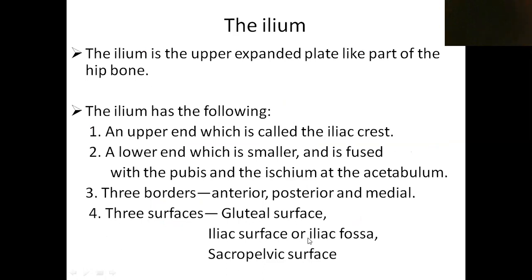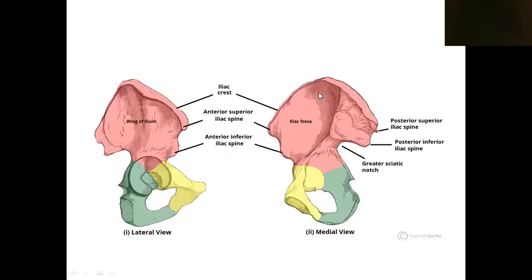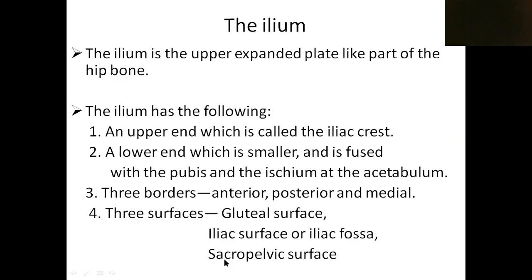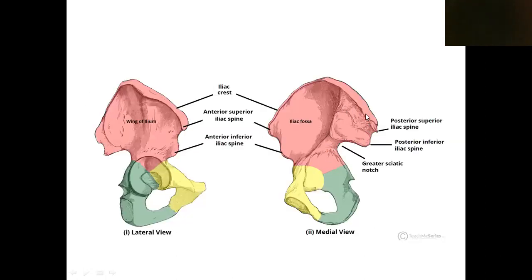The three surfaces are: gluteal surface, iliac fossa or iliac surface, and sacropelvic surface. The iliac fossa is between the anterior border and the medial border. The sacropelvic surface is between the medial border and posterior border. The gluteal surface is the lateral surface between the anterior border and posterior border.